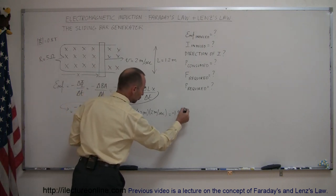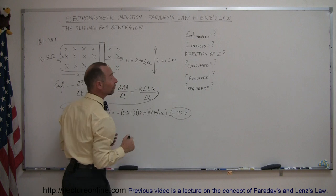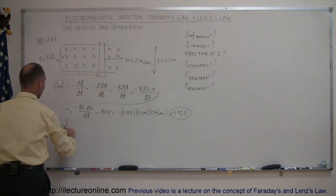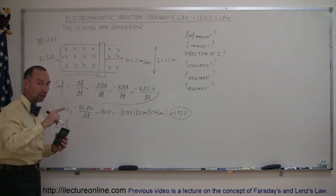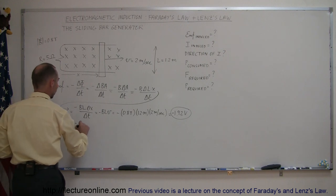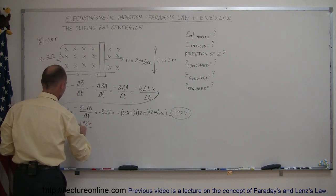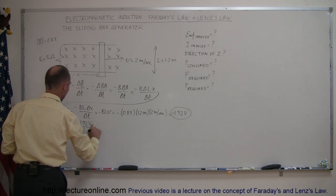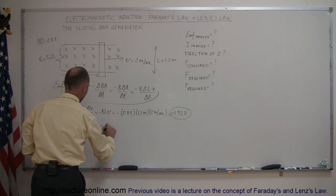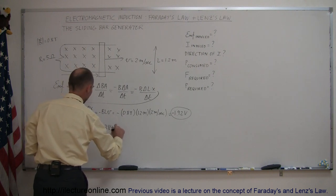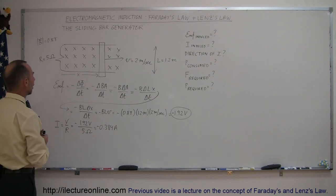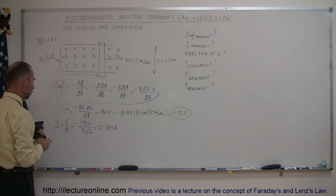Now we have the EMF induced. Next, we find the induced current using Ohm's Law: I induced equals V over R. The voltage causing current to flow through the loop is the induced EMF of 1.92 volts divided by the resistance of 5 ohms, which equals 0.384 amps. The minus sign means it's going in the opposite direction to the magnetic field that induces the current.